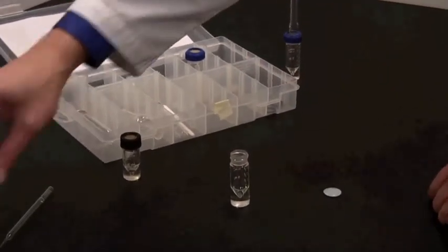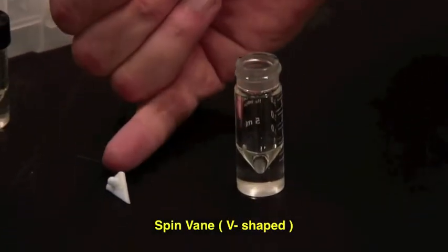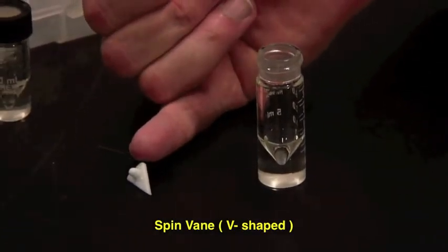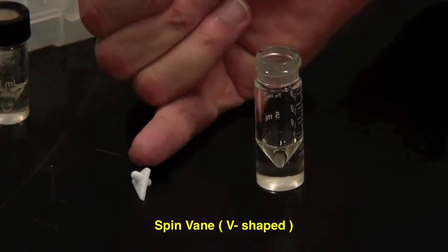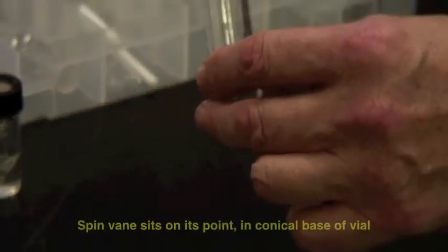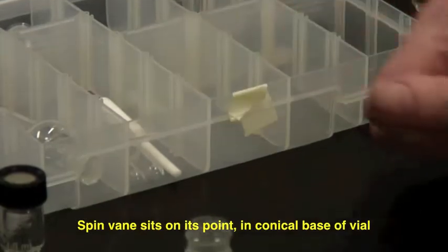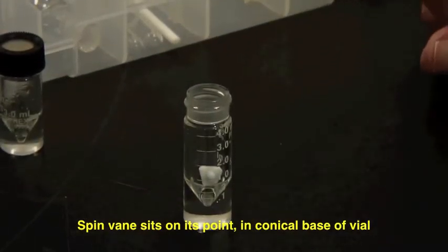If you are wanting to stir something, then you need this item here, which is a spin vane. It's much smaller than the spin bar that you've been using up to now, and it goes into this like that, and actually sits on its point and spins on its point. We'll show you that further in a minute.